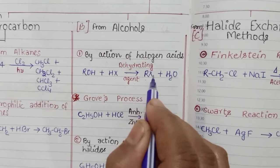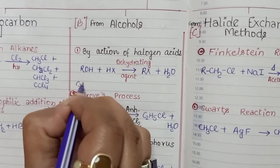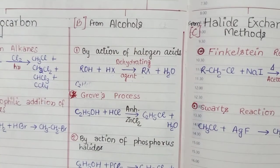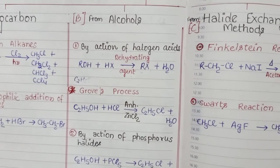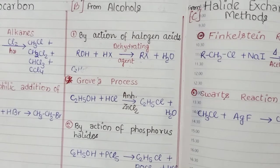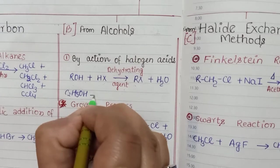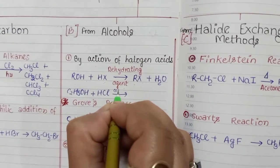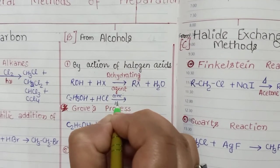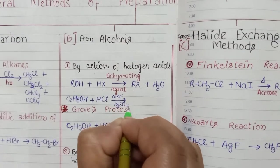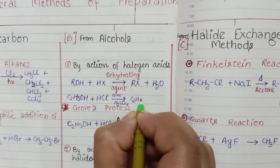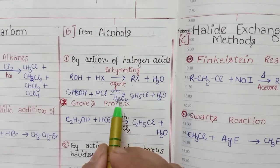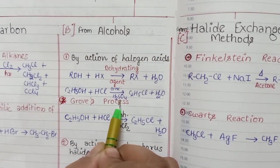For example, C2H5OH reacts with HCl in the presence of concentrated H2SO4 to form C2H5Cl and water. Concentrated H2SO4 is a dehydrating agent.